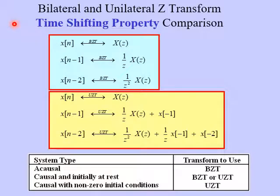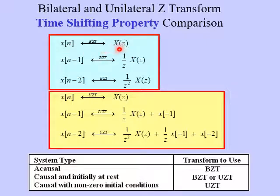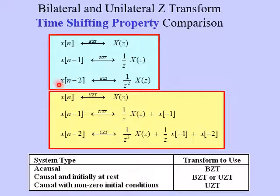Let's do a comparison of the bilateral and unilateral Z-transform time-shifting property. For the bilateral Z-transform, if X of N in the time domain has transform X of Z, then X of N minus one gives the same transform X of Z but we pick up a factor of one over Z, or Z to the minus one. Likewise, if we delay X by two — X of N minus two — we again have X of Z but now pick up a factor of one over Z squared, or Z to the minus two.